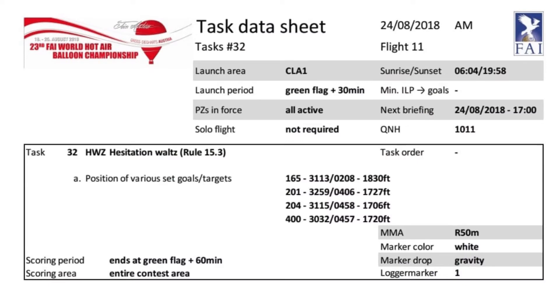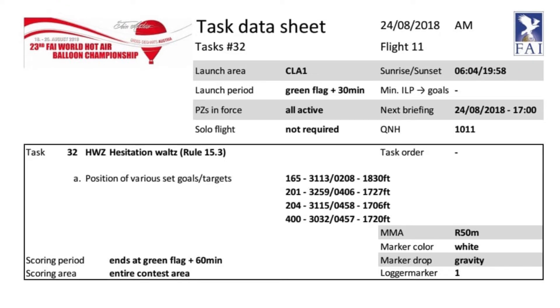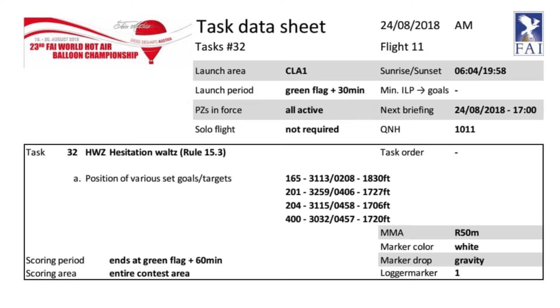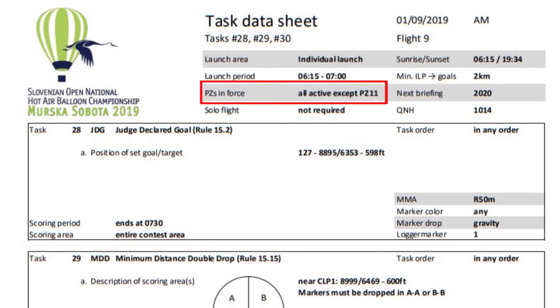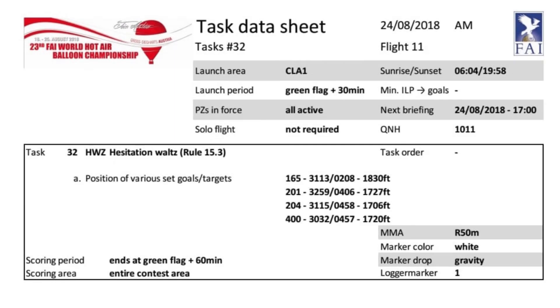Moving along the task sheet, we also have official sunrise and sunset, which is not important for competition purposes except that all tasks must be completed before sunset. Then we have PZs in force. Each competition will have a published list of PZs — short for prohibited zones — where competitors will receive penalties for flying through or landing in. The event director can choose to deactivate one or more PZs for a particular flight, as in this example where PZ11 is not active. Most of the time this section will just say all active, as in our first example.